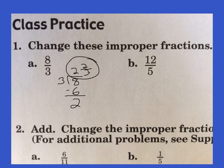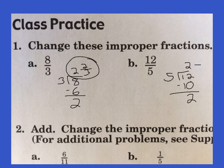B — we have 12 over five. Five goes into 12 two times. Two times five is ten. We're going to get a remainder of two, and we need to write that remainder in the form of a fraction. The two will go on top and the five will get moved over. And we have five and two fifths.